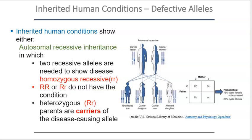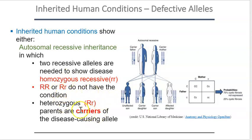Individuals that don't have an autosomal recessive condition are either homozygous dominant (big R, big R) or heterozygous (big R, little r). These individuals are not affected because they have at least one good, functional copy of the allele. However, individuals that are heterozygous — big R, little r — are referred to as carriers. They themselves aren't affected, but they have the ability to pass that faulty allele onto their offspring.